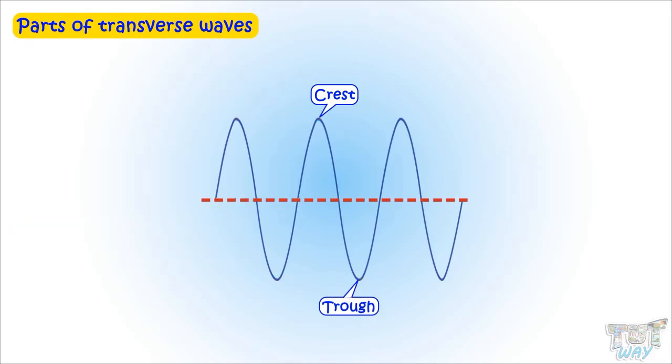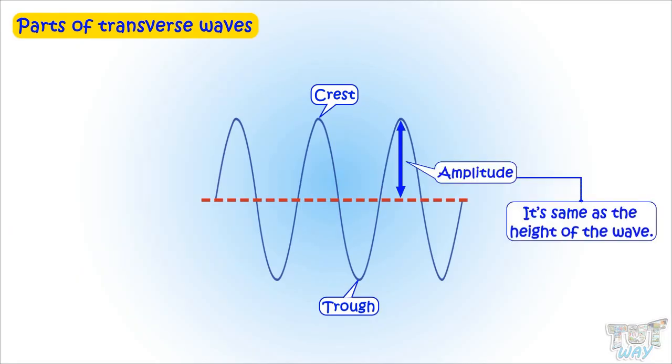Next is the amplitude of a transverse wave. It is the same as the height of the wave. And in order to measure height of the wave, we measure the length from the resting line to the top of the crest. Or, the other way to measure the amplitude is to measure the distance between the resting line to the bottom of the trough. Both are correct.